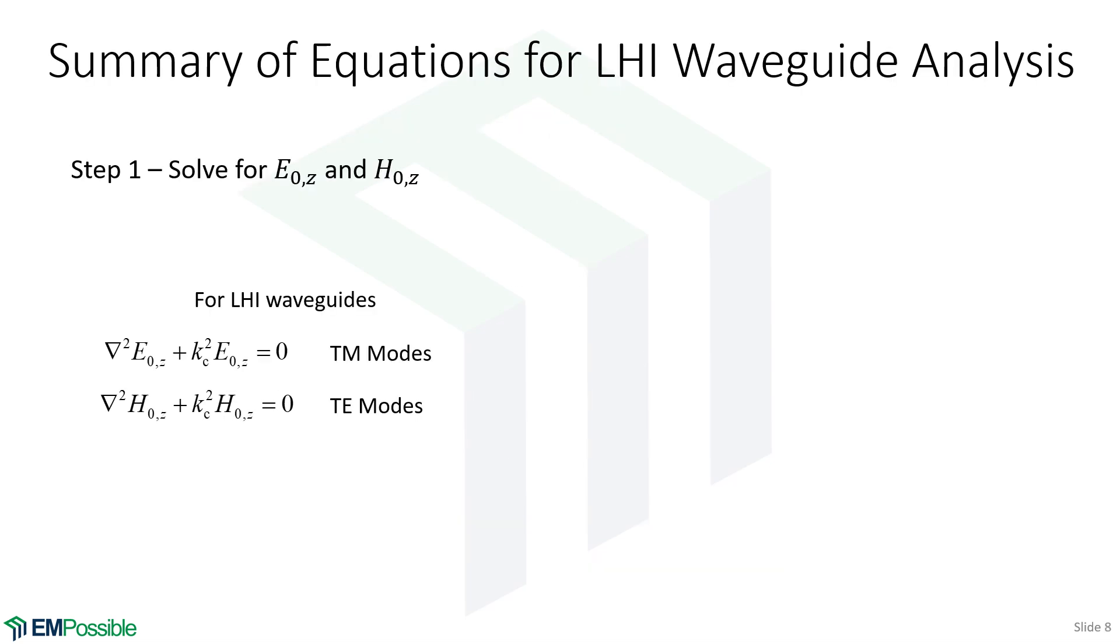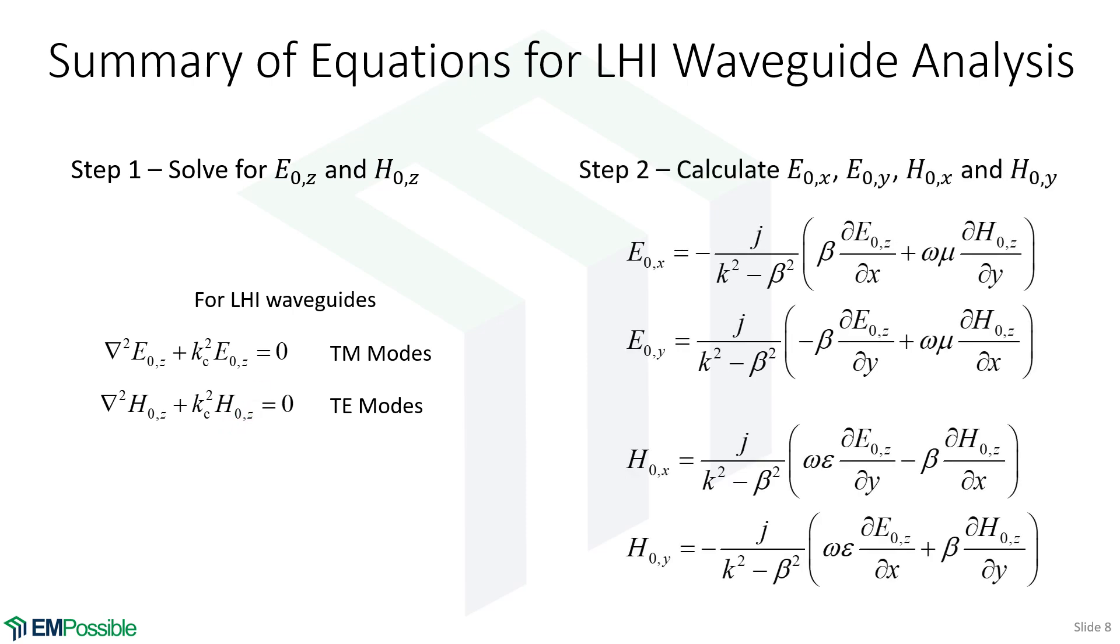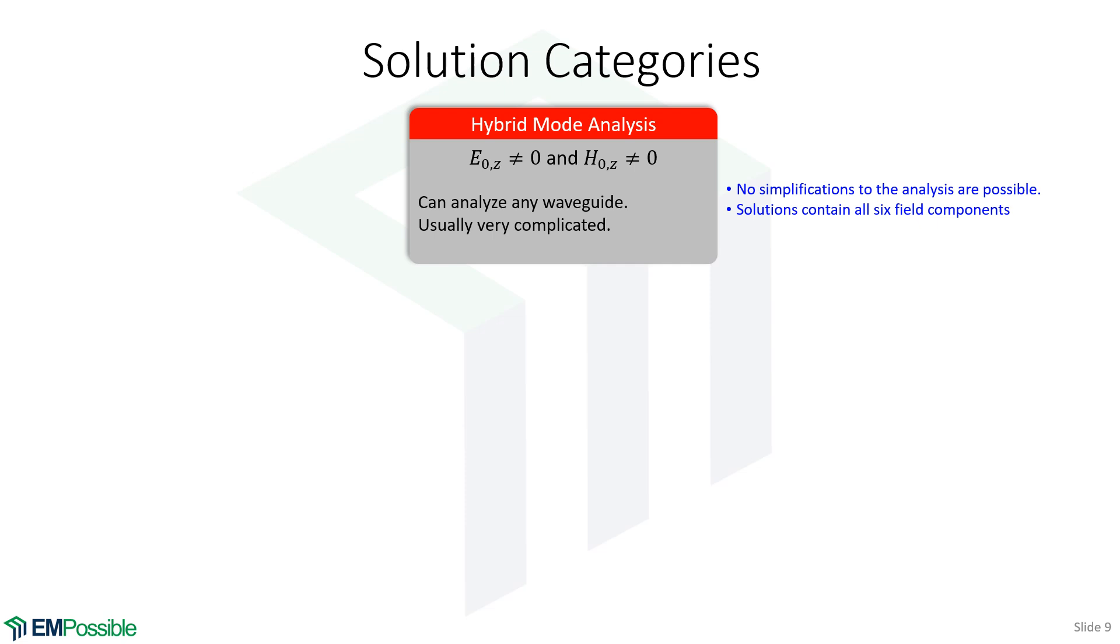So let's summarize where we are and how we would analyze a waveguide. So somehow we would obtain solutions for E naught Z and H naught Z. For LHI media, these are two separate independent equations. If they were not linear, were not homogeneous, were not isotropic, we could not separate these equations, and it would be a more complicated analysis. But even if it was a more complicated analysis, somehow we could obtain a solution to E naught Z and H naught Z. Given those solutions, we can then plug those answers into these four equations that we had and get expressions for all the other field components. So that greatly simplifies our analysis because we just have two things we need to solve for, and we can write everything else in terms of those expressions.